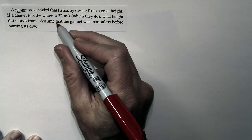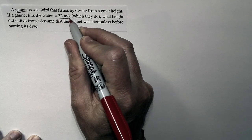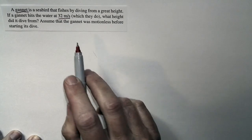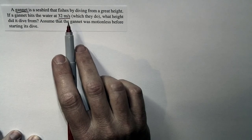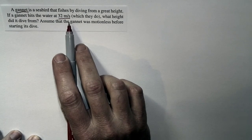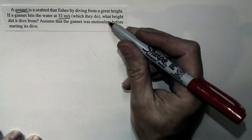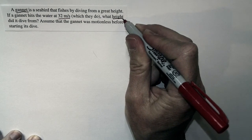We're told that the gannet hits the water at 32 meters per second. That's like greater than 65 miles per hour, so that is a great speed indeed. And we want to know what height it dove from. That's what we're looking for here.